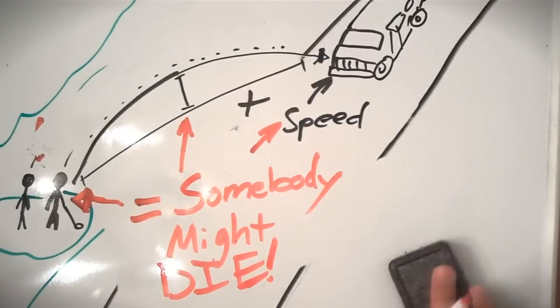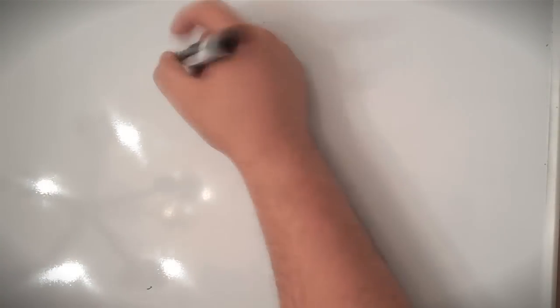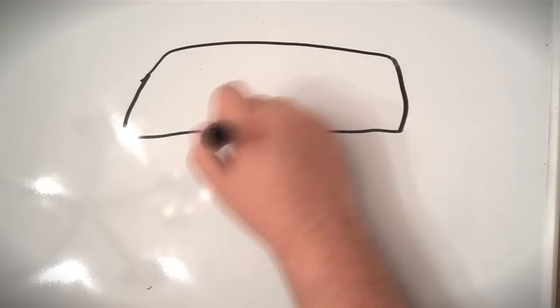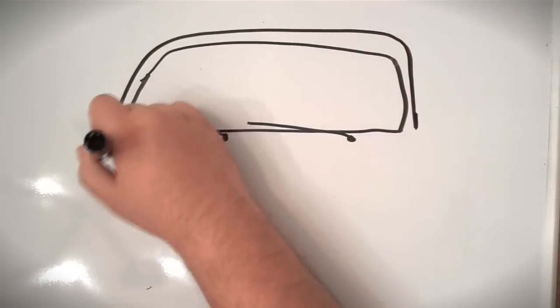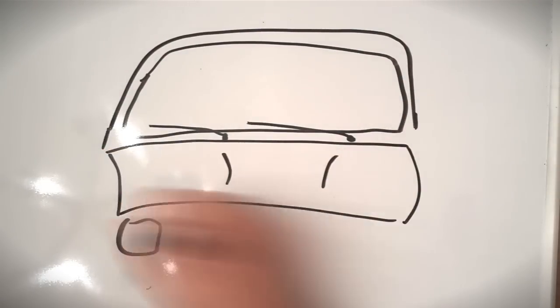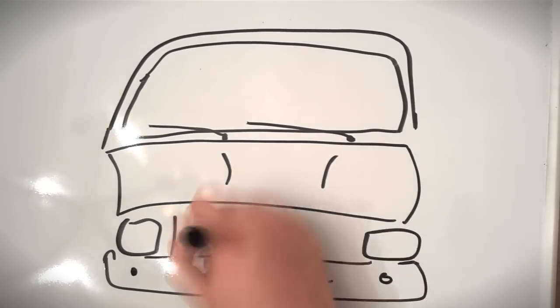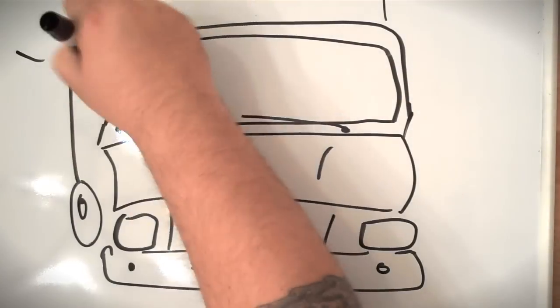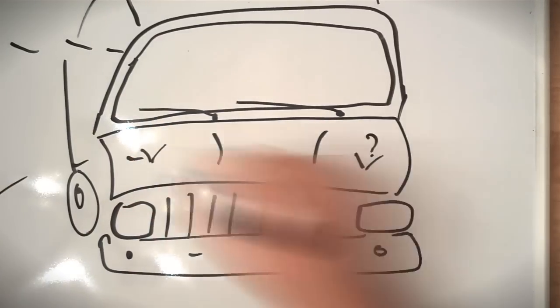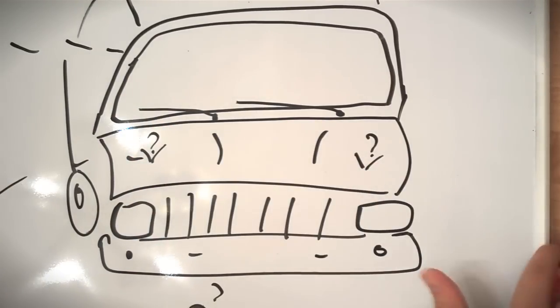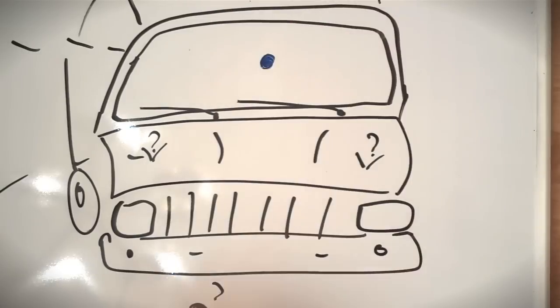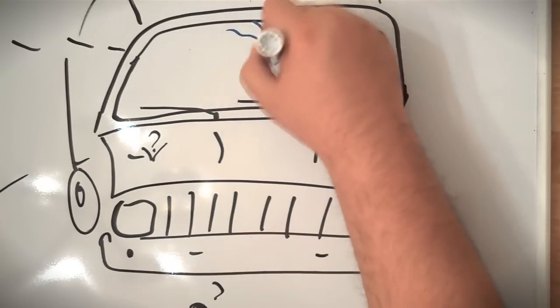And as that minivan came hauling down the freeway, we watched the golf ball go sailing right at it. And it could have hit anywhere. I was thinking maybe it'll hit on the hood or maybe it'll even crack on the road right in front of the van...